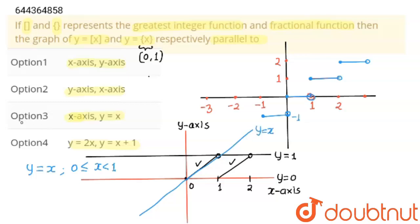So option 3 is correct. First, this was parallel with x-axis. And second, this graph is parallel with y equals x. Every part. Thank you, students.